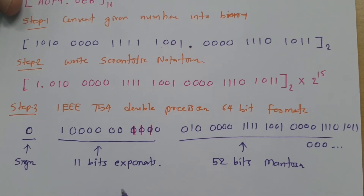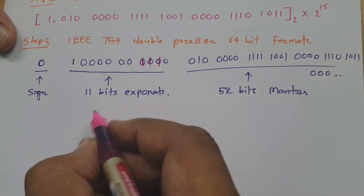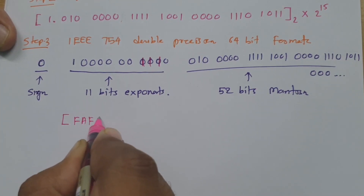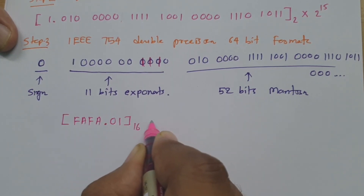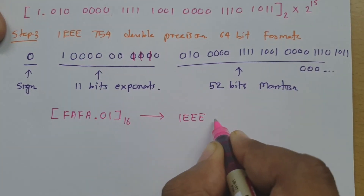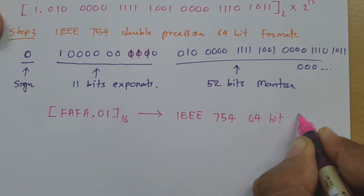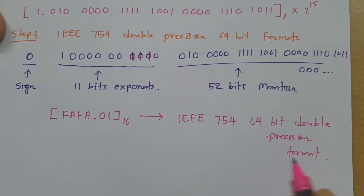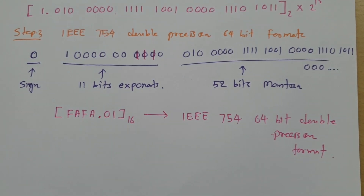Now here is one problem as an assignment. Convert FAFA.01 hexadecimal into IEEE 754 64-bit Double Precision Format. Write your answer in the comments so I can confirm you are understanding. I will definitely get back to you if any query is there. Thank you so much for watching this video.